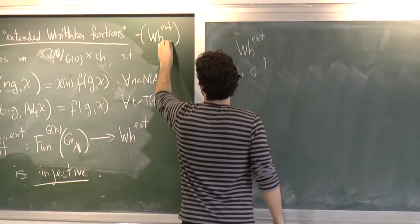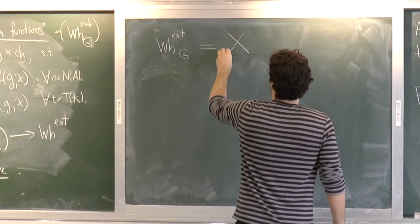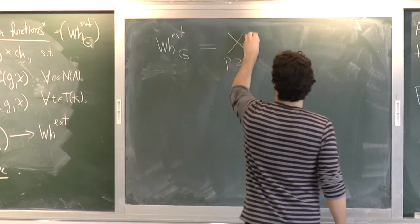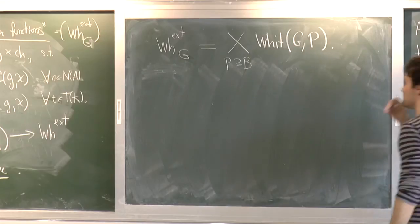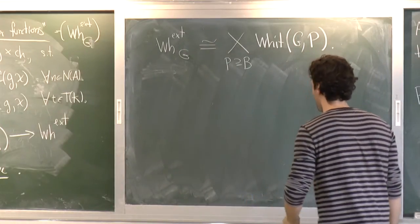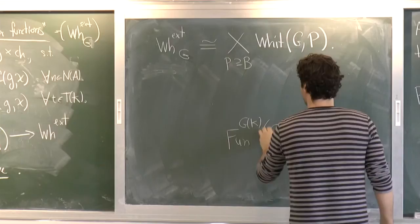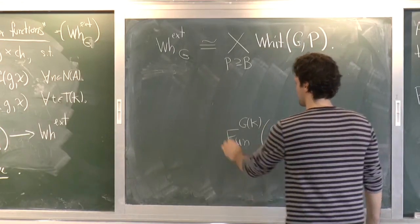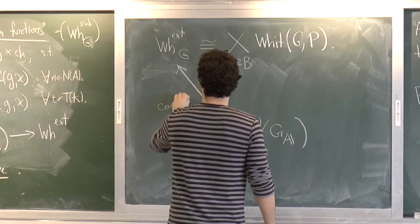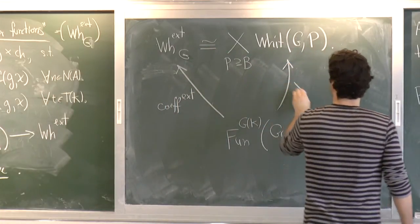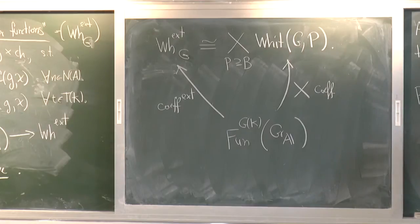If you repeat the same game, you get this. And for GL2, if you plug in the G or B, you obtain what we had before with the same notation. Now, actually, I uncovered the board.